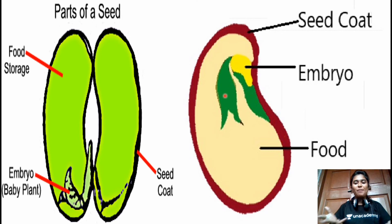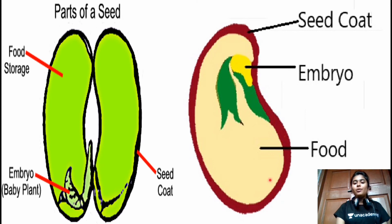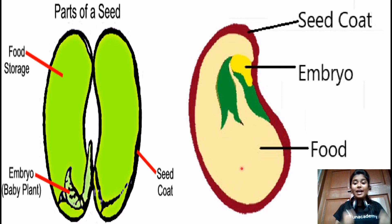Here you can see two pictures of a seed. The green part is known as the cotyledon, and the black lining along the pointer — the black, brown, or maroon lining — is known as the seed coat, which is the outer covering of the seed. The creamy inner part is the cotyledon. Cotyledons are the seed leaves.